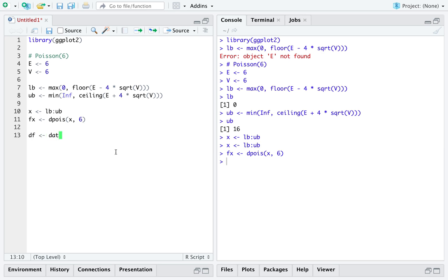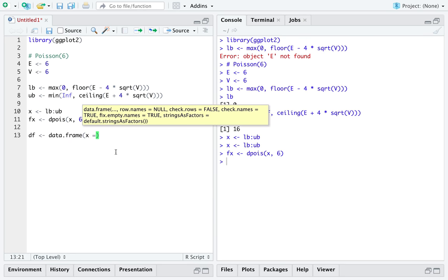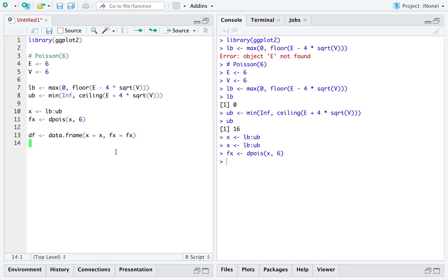We will put these into a data frame, and on the x-axis we'll put the vector x and on the y-axis the vector fx. This is a distribution with a support only at the non-negative integers, so we will use the geometry of a point.